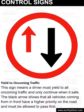Yield to oncoming traffic. This sign means a driver must yield to all oncoming traffic and only continue when it is safe. The black arrow shows that all vehicles coming from in front have a higher priority on the road and must be allowed to pass first.